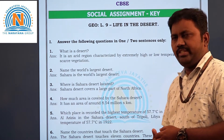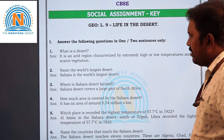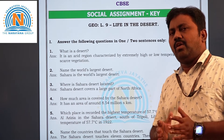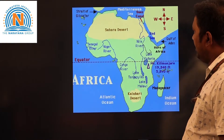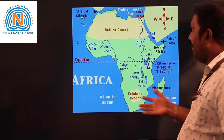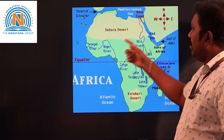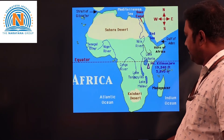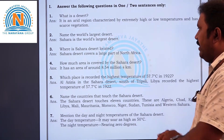Now let's take the second question: Name the world's largest desert. Sahara is the largest desert in the world. You can see the picture — this is the African continent map, and here is the Sahara desert. This is the world's largest desert.